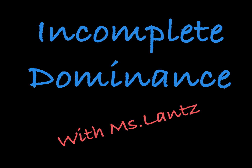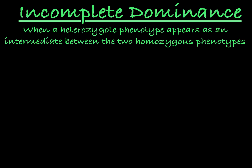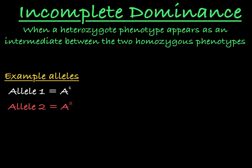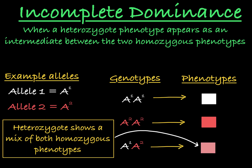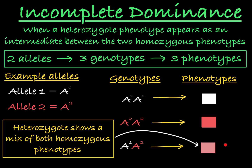In this video, I'll discuss incomplete dominance in genetics. Incomplete dominance describes a relationship between two alleles of a gene in which the heterozygous phenotype appears as an intermediate between the two homozygous phenotypes. This phenomenon is interesting because you see three different phenotypes from the three genotype combinations between two alleles.